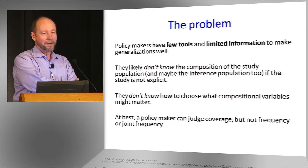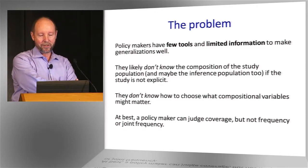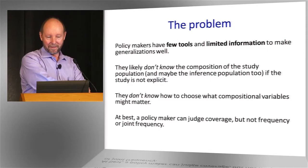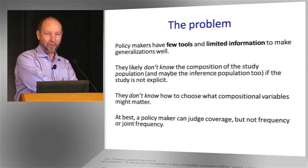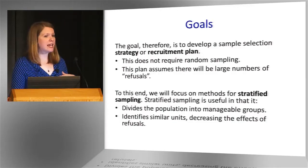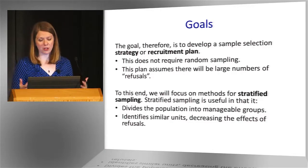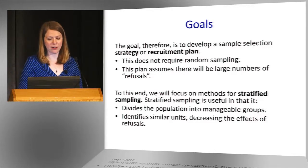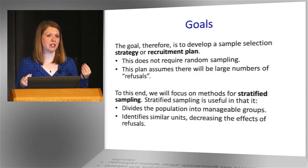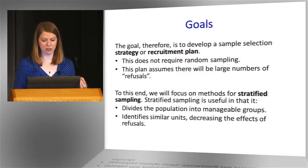A policy maker or someone else trying to apply research usually doesn't know much about the composition of the study population. They may not even know everything they need to know or would like to know about the composition of their inference population. The goal then is, once you've stated what variables you think might matter, you need to find a way that you can select a sample that is just like a miniature of the population on those variables.